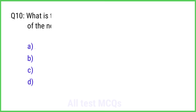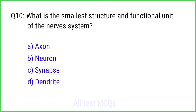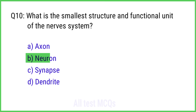Question No. 10. What is the smallest structural and functional unit of the nervous system? The right answer is Option B: Neuron.